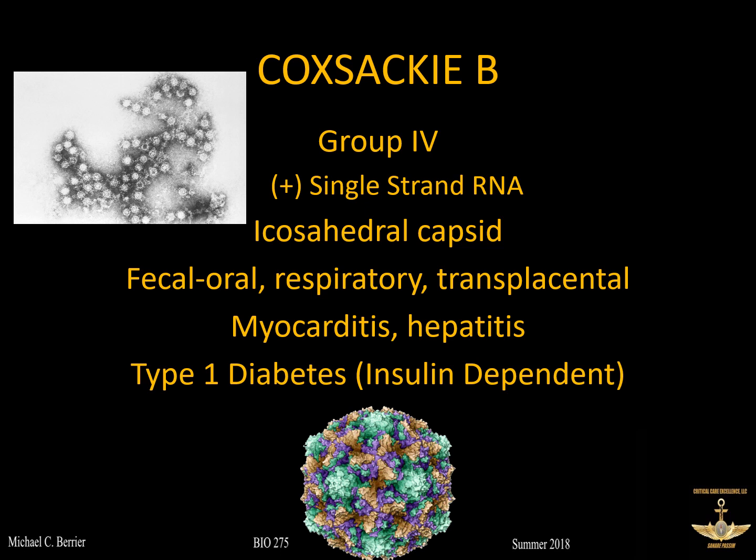Coxsackie B viruses are implicated in things like myocarditis, hepatitis, and general malaise. There is mounting evidence over the years of a relationship between Coxsackie B infection and the onset of type 1 diabetes, also called insulin-dependent diabetes.